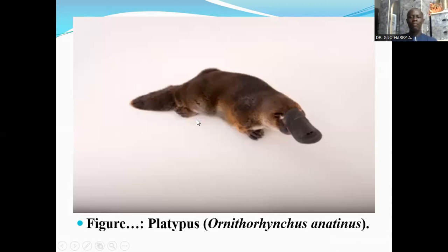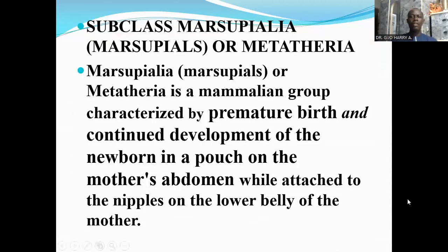Now I want to look at the subclass Marsupialia — the marsupials. The subclass Marsupialia is also called the subclass Metatheria. It is a mammalian group characterized by premature birth and continued development of the newborn in a pouch on the mother's abdomen, while attached to the nipples on the lower belly of the mother. The offspring are given birth to prematurely and accommodated in a pouch, feeding constantly until they are mature enough to be independent.